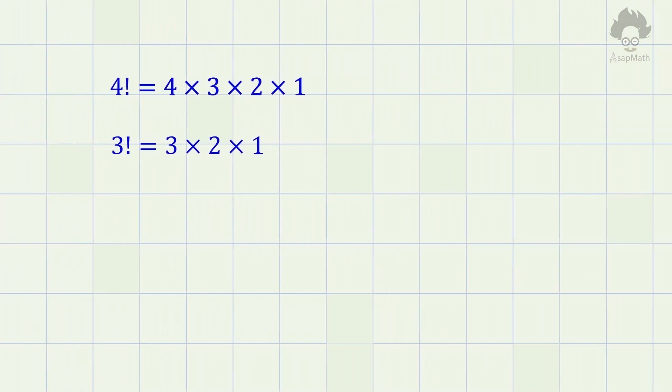According to the definition, factorial 3 equals 3 times 2 times 1. Do you see any relationship between factorial 4 and factorial 3? Yeah, there is a relationship. If we divide factorial 4 by 4, then we can get factorial 3.